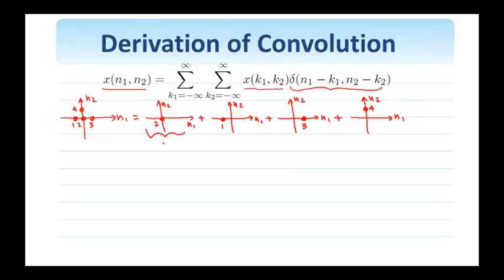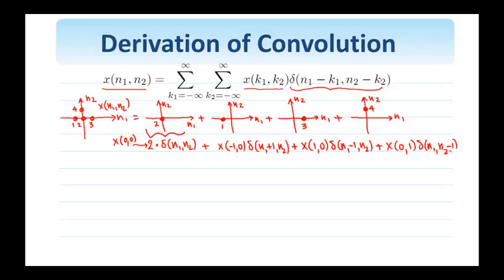Now, I can write this, this is a delta at the origin, delta n1, n2, the height of the delta is 2, and this 2 is clearly the value of my signal x at 0, 0. Similarly, I have the value of the signal at minus 1, 0, equal to 1, delta n1 plus 1, n2, plus the value of the signal at 0, 1, and the delta is at location n1, n2 minus 1. I'll make use of this decomposition right away in deriving the convolution sum.